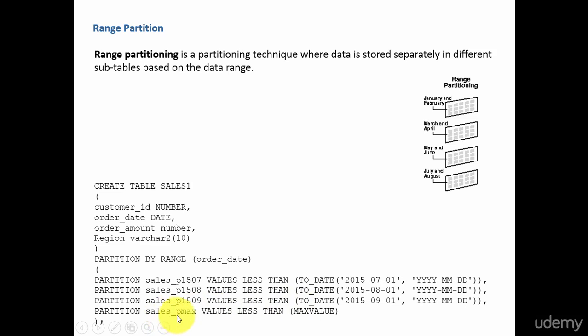All the other values which are greater than this value will be stored in salesP1508. I divided it to 4 partitions. Whereas you can create a table with 12 partitions, each partition holding a month's worth of data.